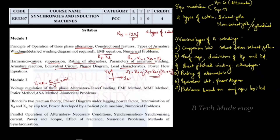With some disadvantages of direct loading, we look at indirect solutions. There are four indirect methods: the EMF method, the MMF method, the ZPF (Potier) method, and the ASA method.